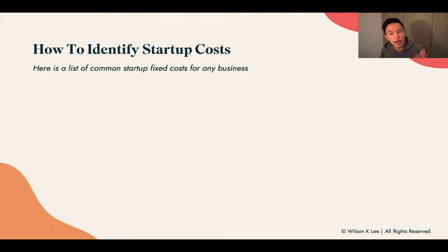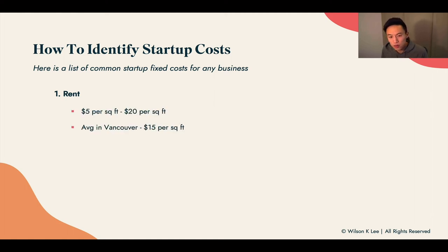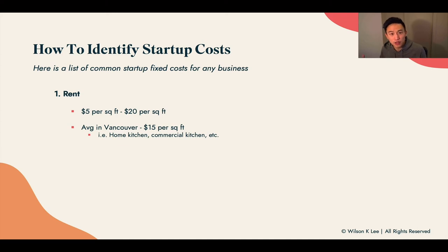How do you identify startup costs? Here's a common list of fixed costs for any type of business, with context for your Instagram home food business. First up: rent, usually $5 to $20 per square foot — in Vancouver it's around $15 per square foot. This applies to a home kitchen, commercial kitchen, or ghost kitchen. But if you're living at home with your family, rent is often not a cost you incur — and that's a really big fixed cost you can save on.